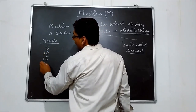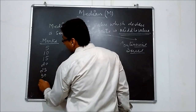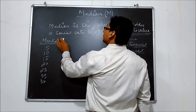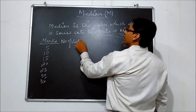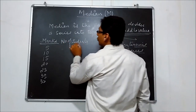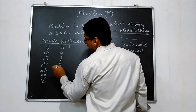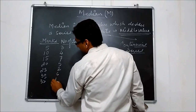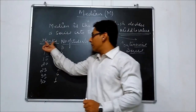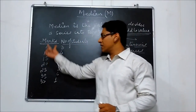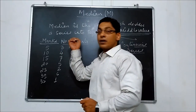Marks: 5, 10, 15, 20, 25, 30, 35. Number of students. This is discrete series — marks and number of students, value and frequency both are given, so it becomes a discrete series.